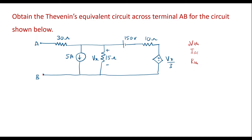First, let me calculate VTH. VTH is the Thevenin's voltage — that is, the voltage at the open terminals. So voltage across A and B is VTH. In this circuit, as terminal A is open, the current through the 30-ohm resistor is 0 — no current flows through the 30-ohm resistor. Therefore, the voltage VX equals VTH; VX and VTH will be the same.